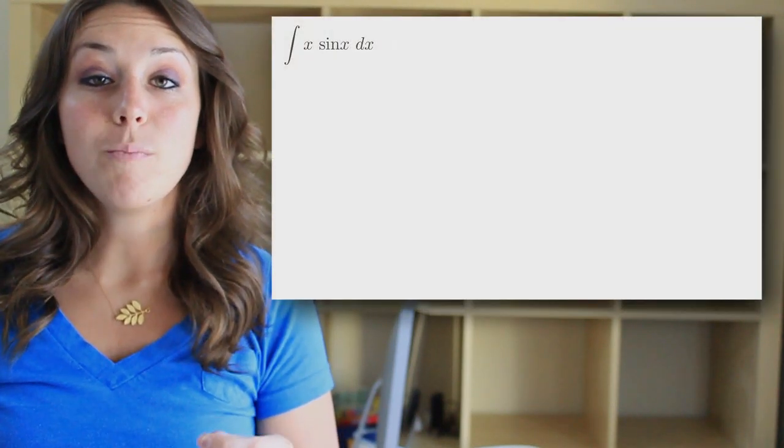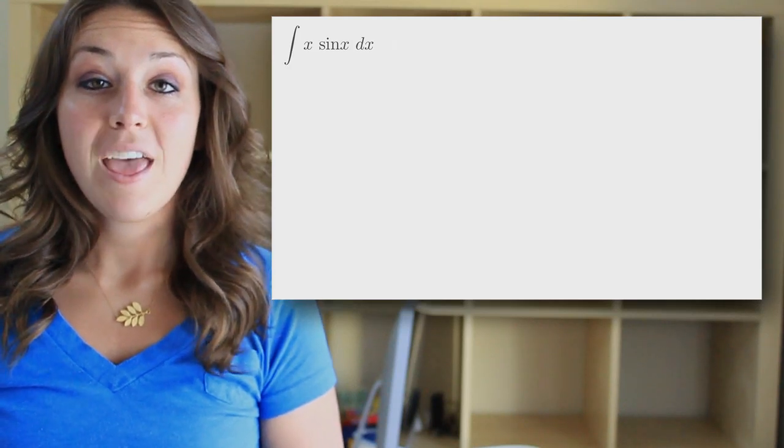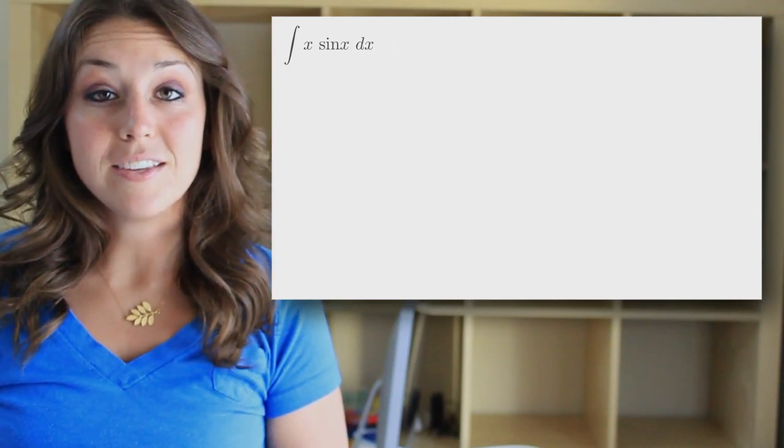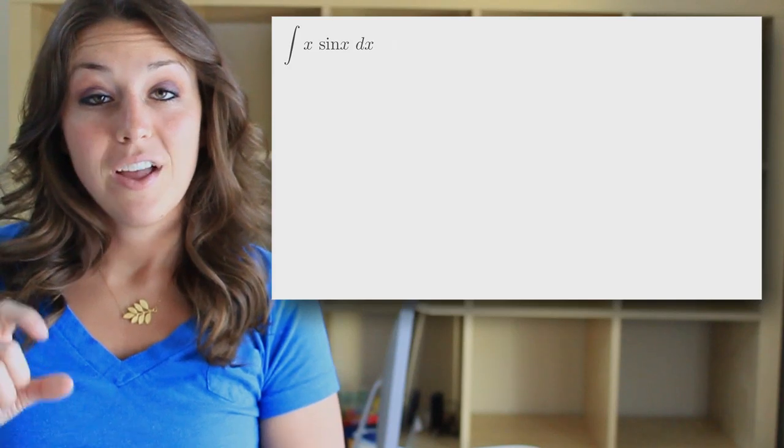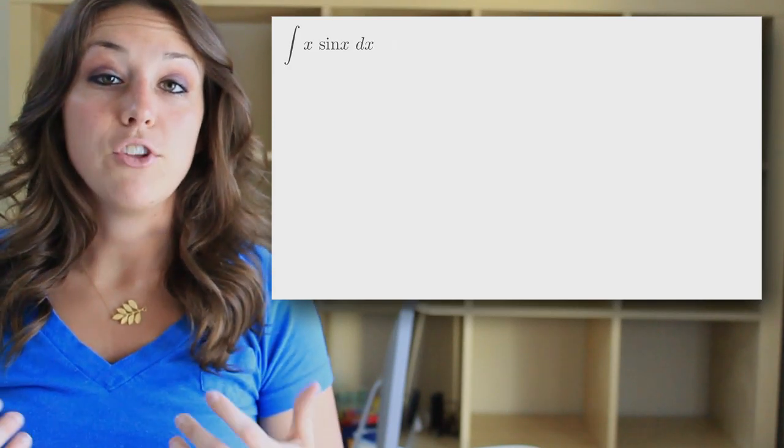To use integration by parts, you're looking for a function you can easily break down into two pieces. These two pieces should be multiplied together in your original function. Ideally, you want the derivative of one of these pieces to be significantly simpler than the original piece, and by simpler, we usually mean of a lower degree.